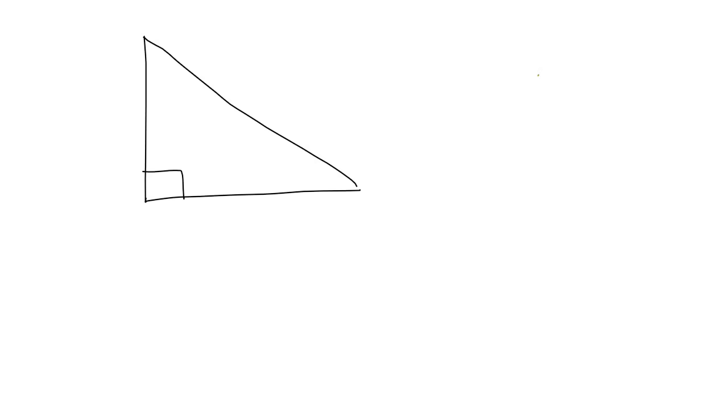In this lesson, we are going to look at how to do the Pythagorean Theorem. What we're going to need first is a 90-degree triangle. Then, from that 90-degree angle, draw a line to the opposite side at 90 degrees — like that.